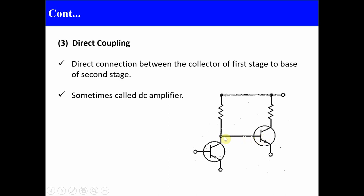In direct coupling, the output is measured at the collector terminal of the transistor, where there is both DC voltage and AC output. There is no frequency limitation at the collector terminal. That is why the direct coupling configuration is also known as a DC amplifier — because it has a frequency range from zero hertz to effectively infinite hertz.